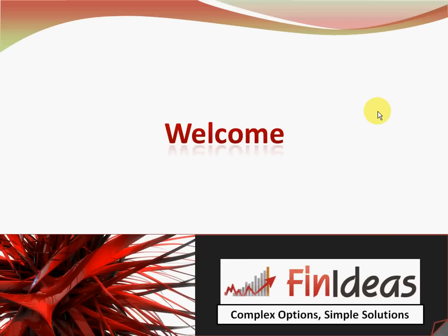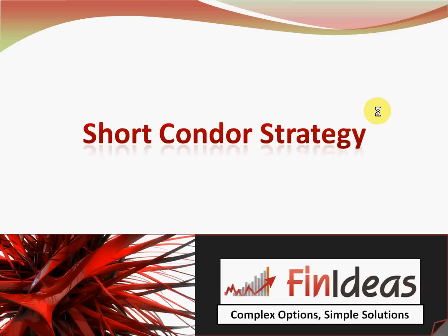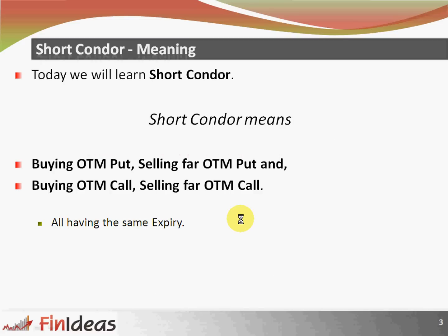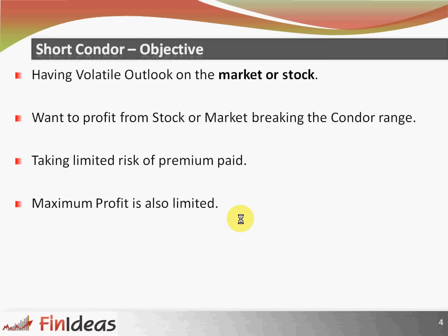Hello friends, welcome to Fin Ideas. Today we will learn the short condor strategy. Short condor means buying OTM put and selling far OTM put, and buying OTM call and selling far OTM call, all having the same expiry. The objective of making a short condor is we are having a volatile outlook on the market or stock. We want to profit from the stock or market breaking the condor range. We are taking limited risk for premium paid and maximum profit is also limited.